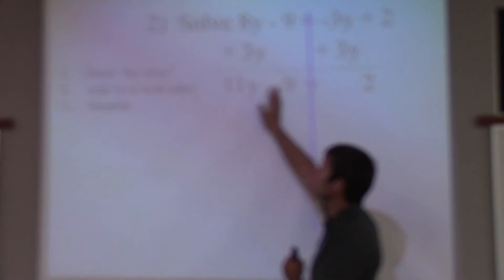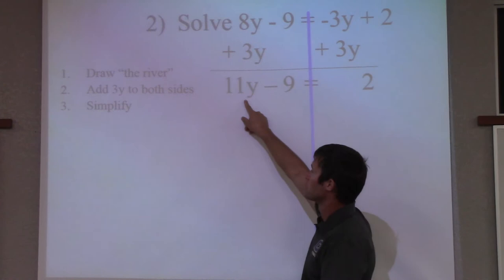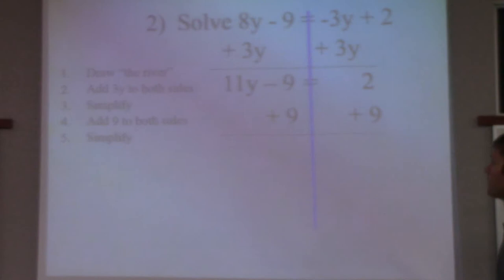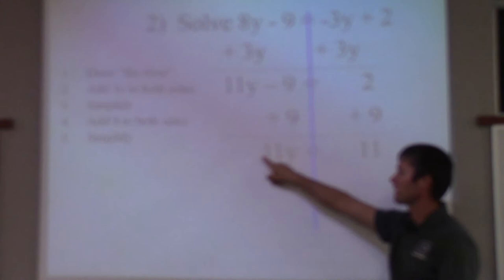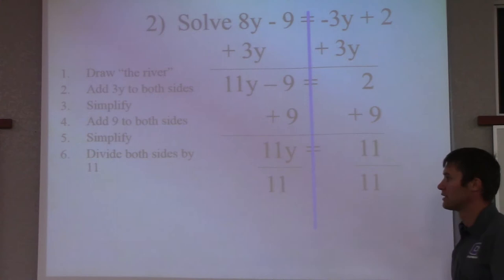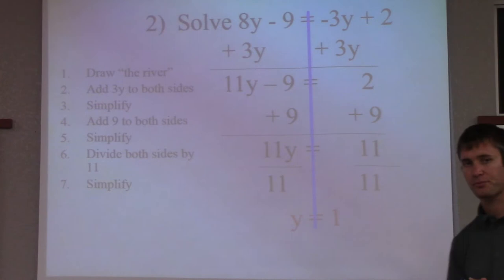So to get rid of the 9, we would add it because it's subtracting. So we'll add 9 to each side. Now, 2 plus 9 is 11, so we have 11 equals 11y. How do I get rid of this 11? We'll divide by 11. 11 divided by 11 is 1. There's our answer.